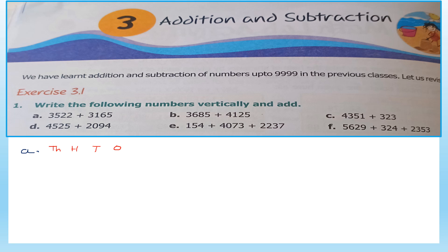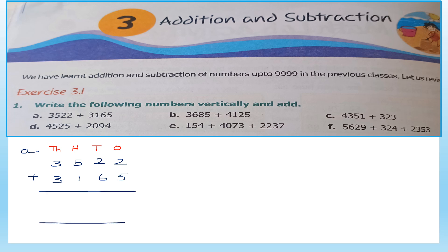Let's write 3,522 in the correct places. The next number is 3,165. Let's write it here. Now let's add: 2 plus 5 is 7, 2 plus 6 is 8, 5 plus 1 is 6, and 3 plus 3 is 6. So we get 6,687.